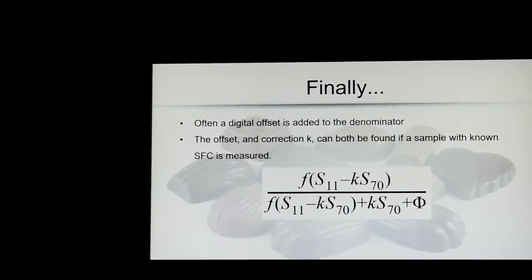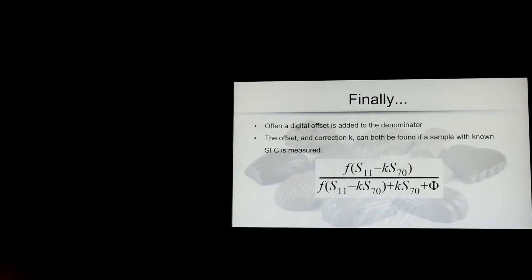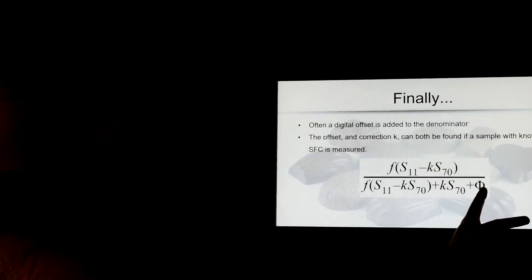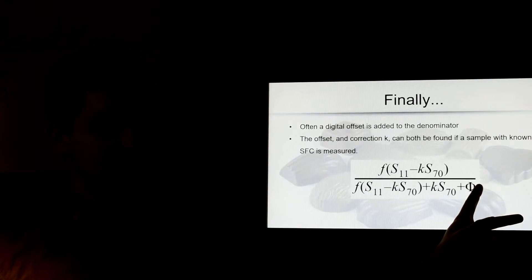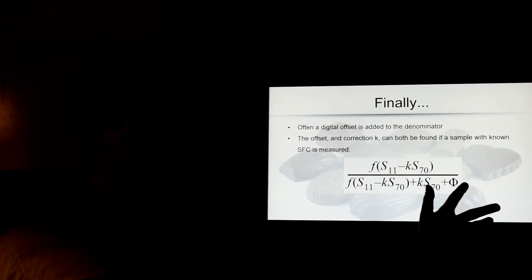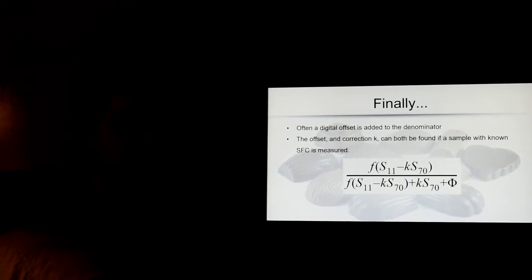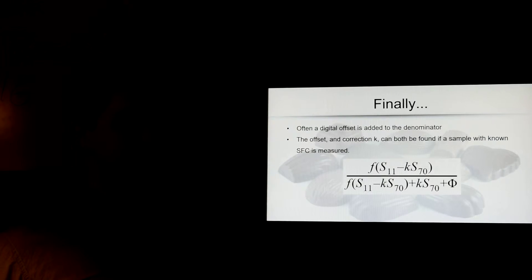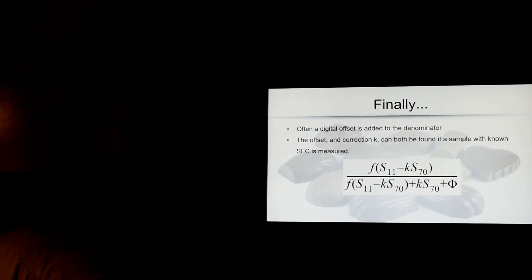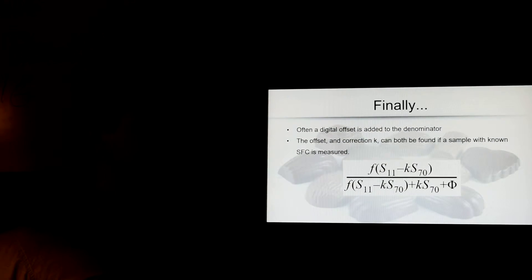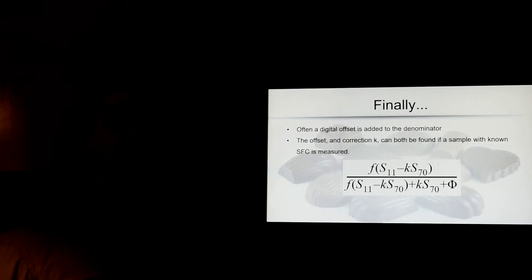Finally, some companies give you a digital offset. That is a constant that you add to the denominator right there. It depends on the equipment, and the program used, and the computer, and so on. To find F and K, you simply measure a sample with a known amount of solid, usually that's mineral oil with a piece of plastic with known concentrations. And then you find it every day through a calibration.